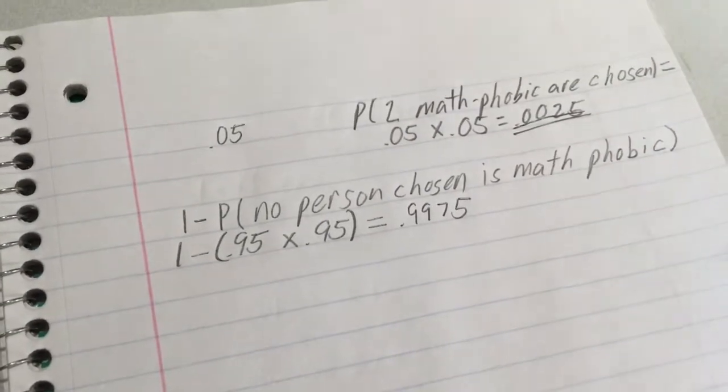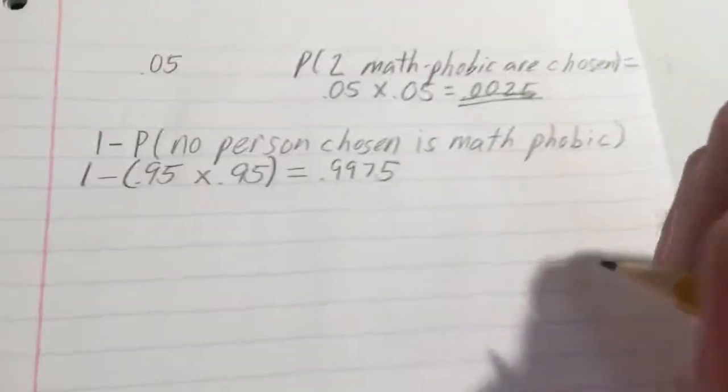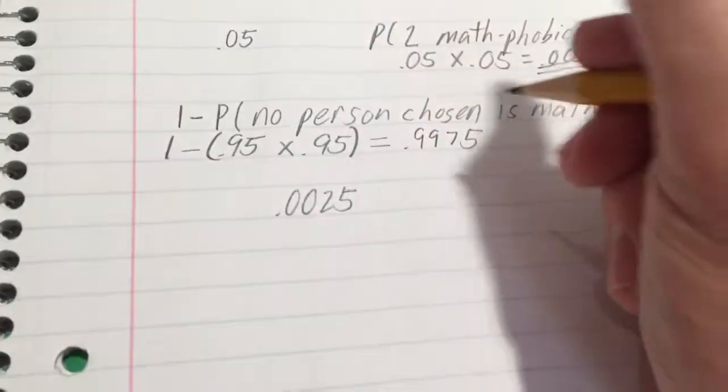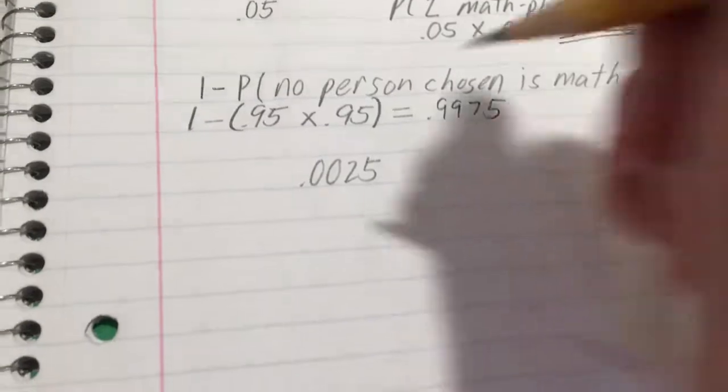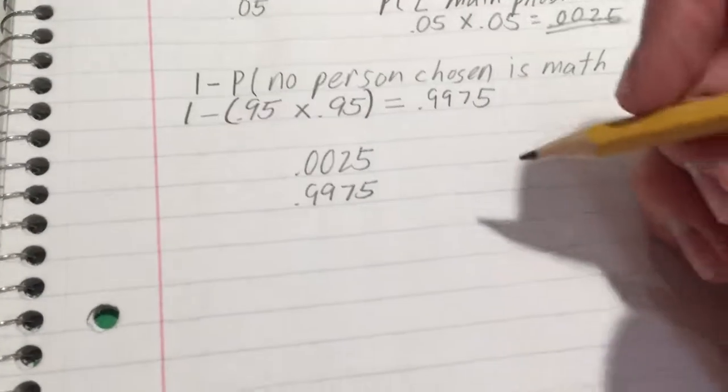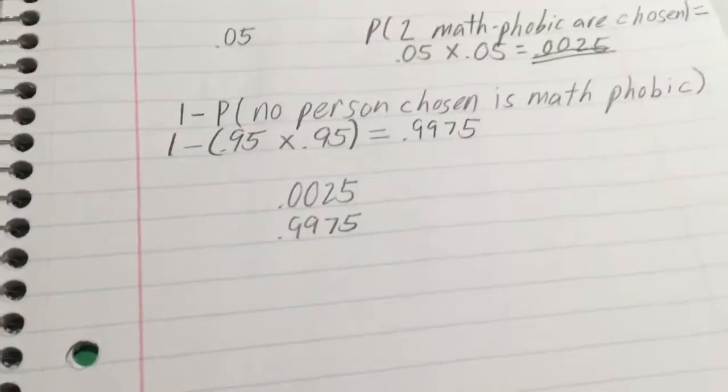So the full answer for Exam 1, Question 2, Part B would be: 0.0025 is the probability that two math-phobic people are chosen, and 0.9975 is the probability that at least one person chosen is math-phobic.